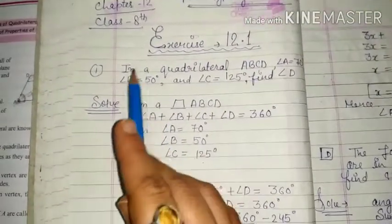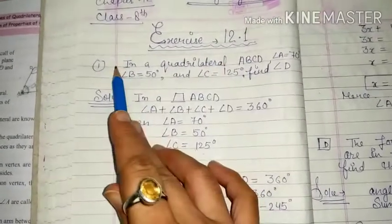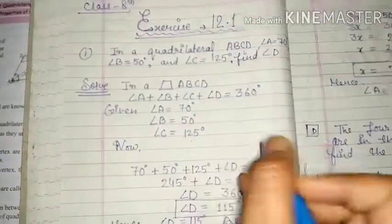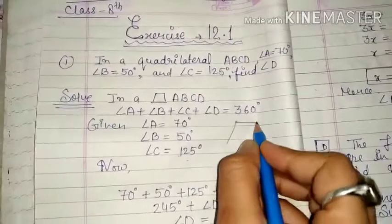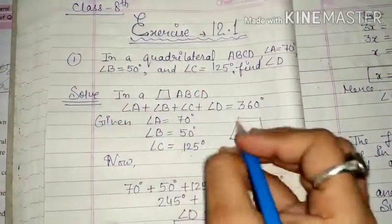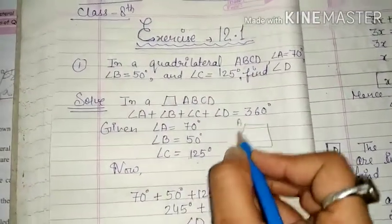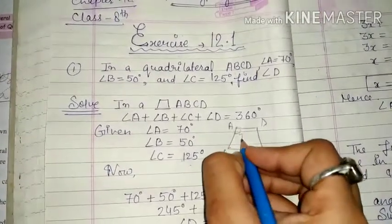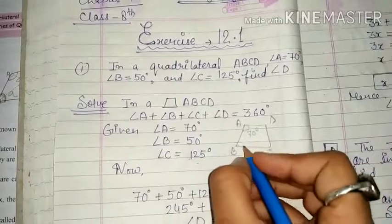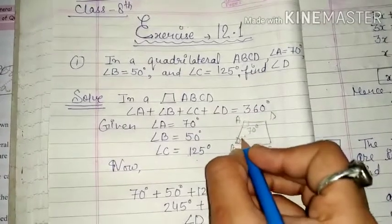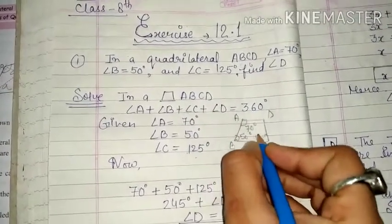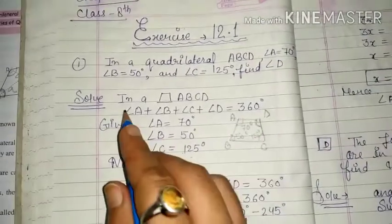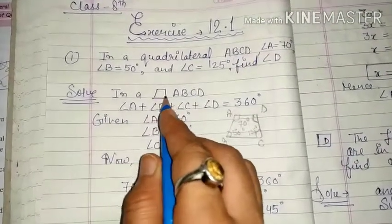In Exercise 12.1, question number 1: in a quadrilateral ABCD, we will make the quadrilateral and find angle D.